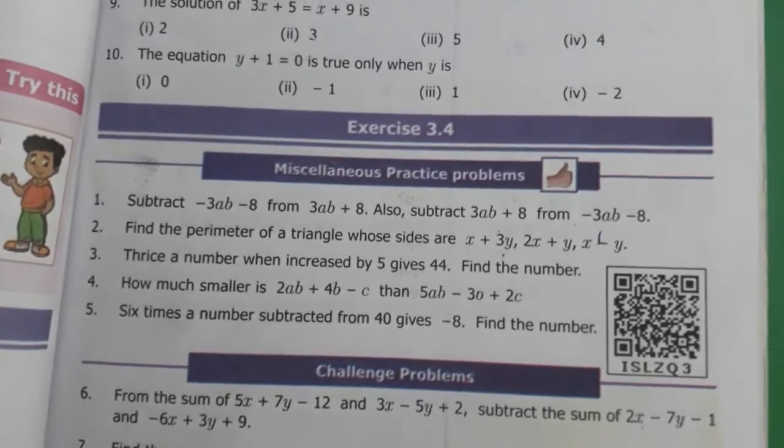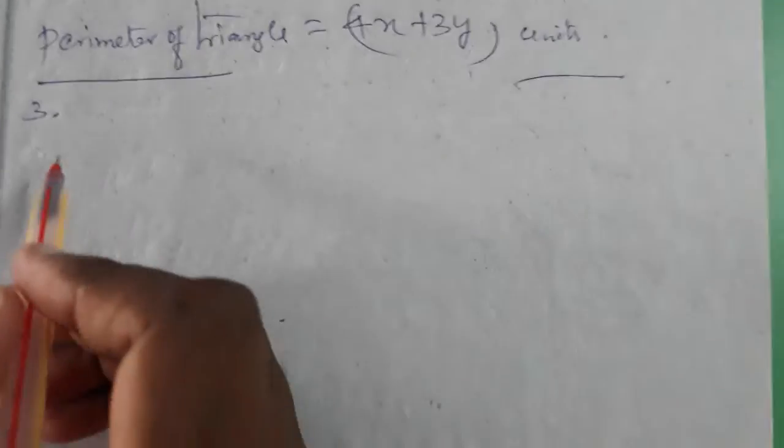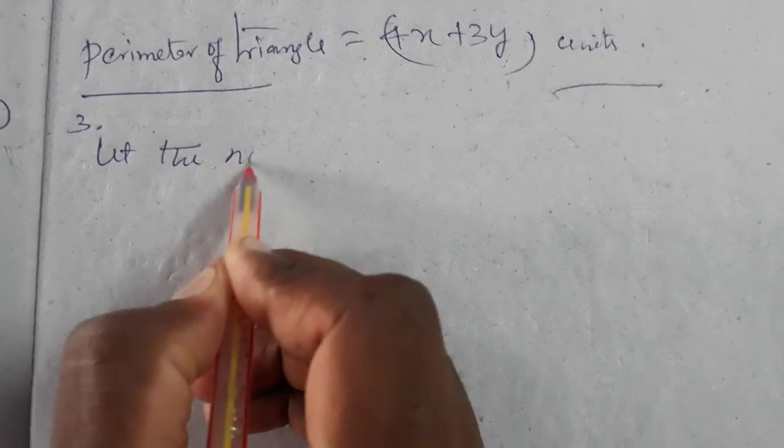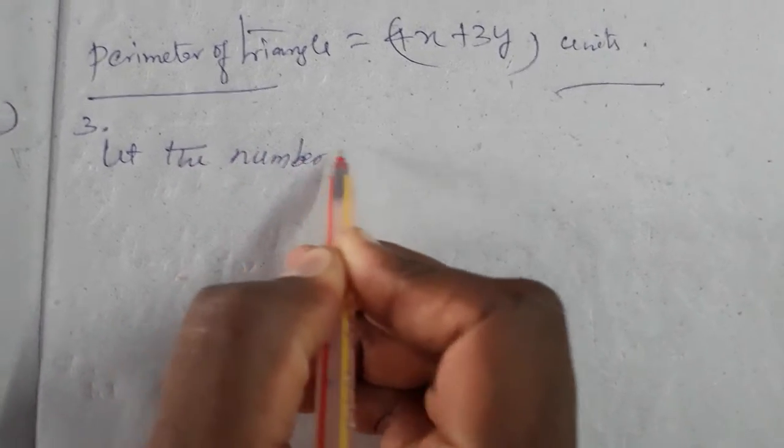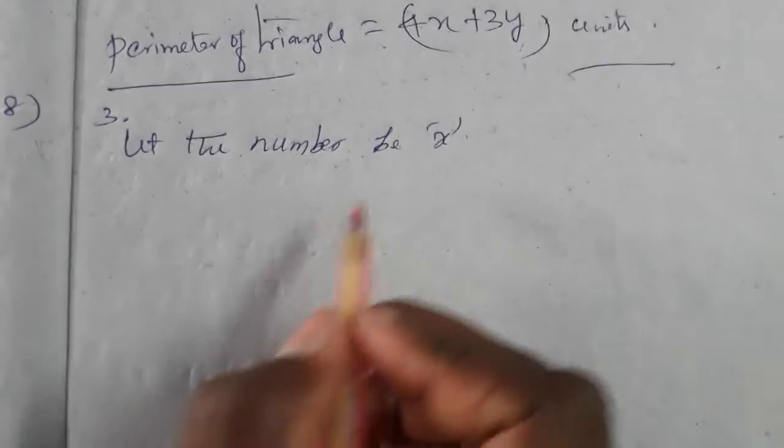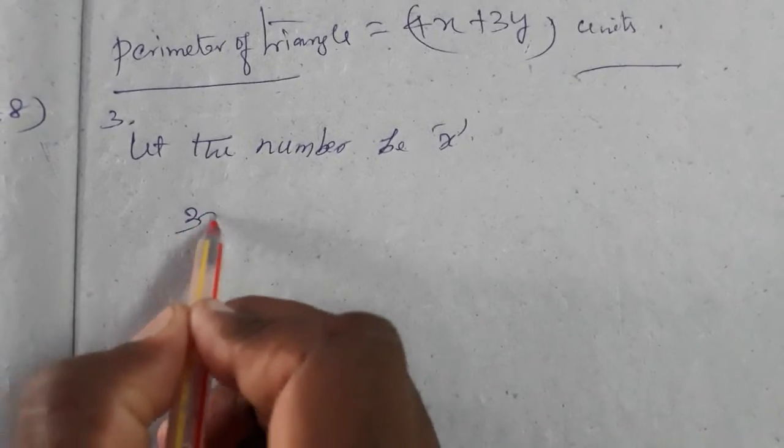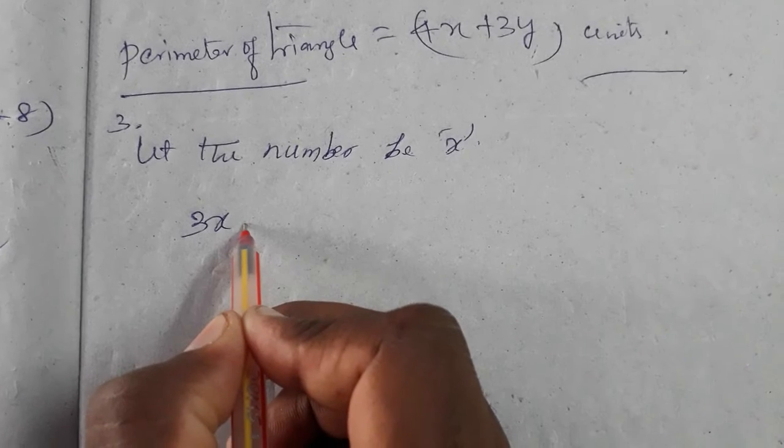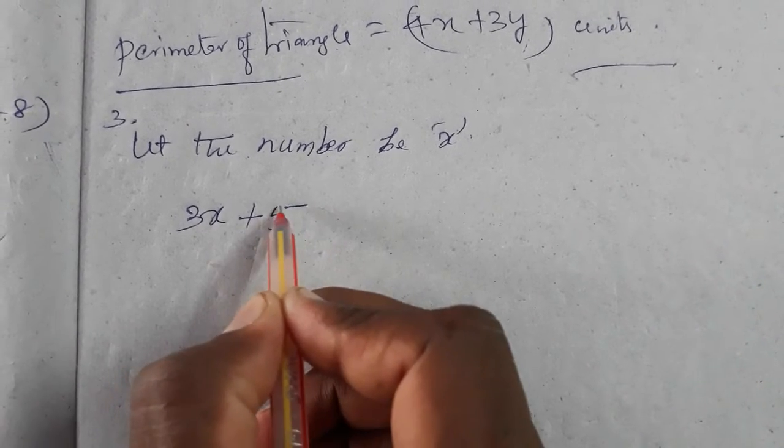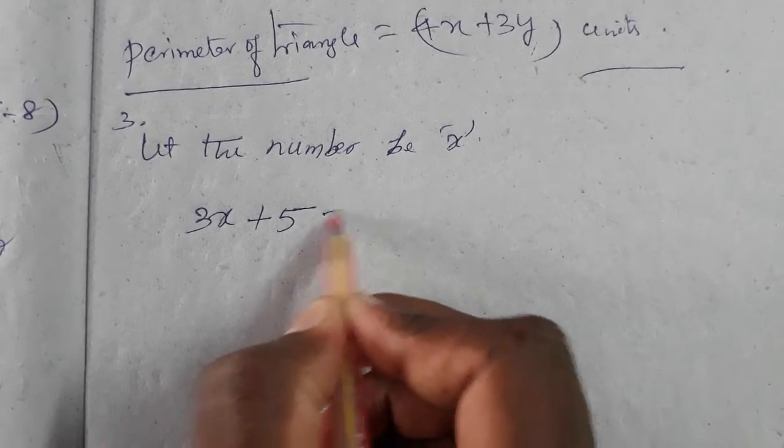Then going to the solution. Let the number be x. Thrice the number is 3x. When increased by 5 gives 44.